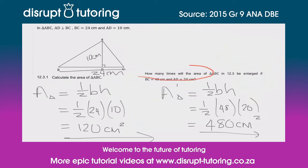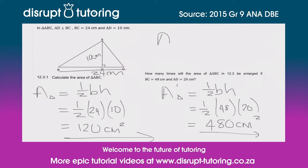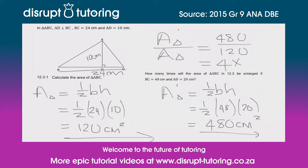But that's not the final answer — they've asked how many times the area will be enlarged. So we take the area of the new triangle over the area of the old triangle: 480 divided by 120. The new triangle is 4 times the size of the original — so we multiply the original area by 4 to get the new area.